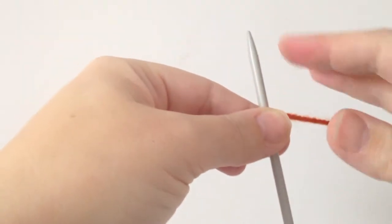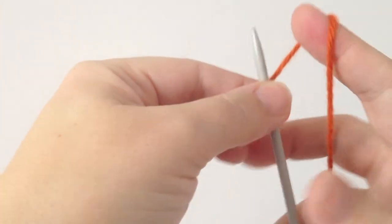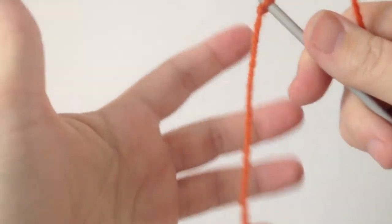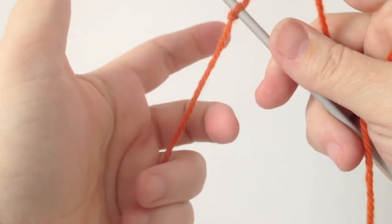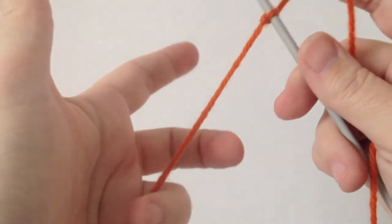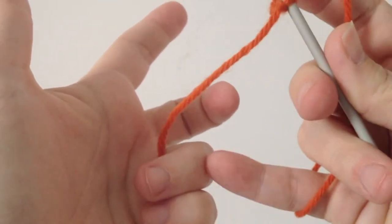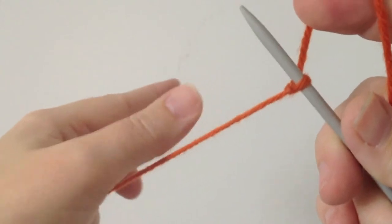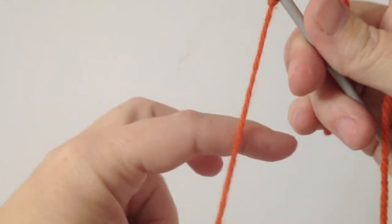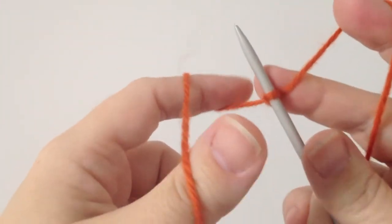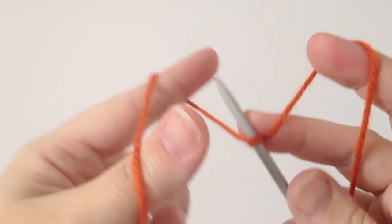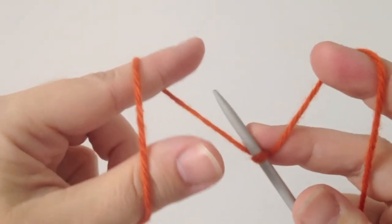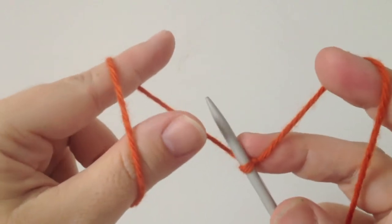What you're going to do is grasp the yarn like so with your pinky and your ring finger. Then you're going to keep it taut and you're going to wrap it around your thumb and your index finger like so.